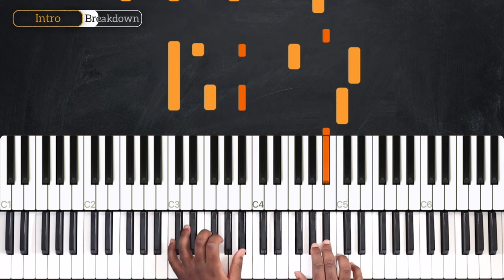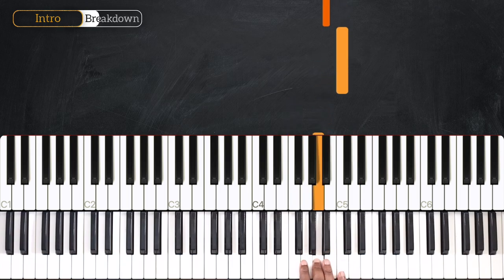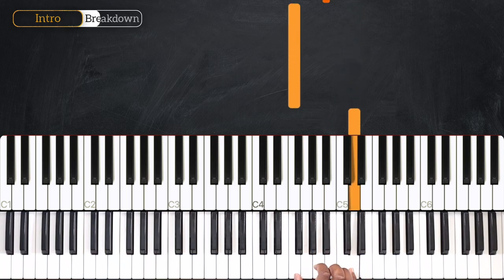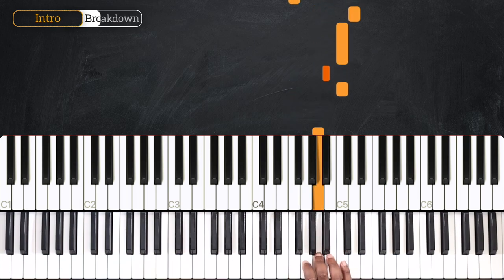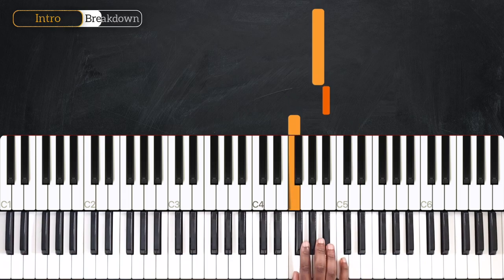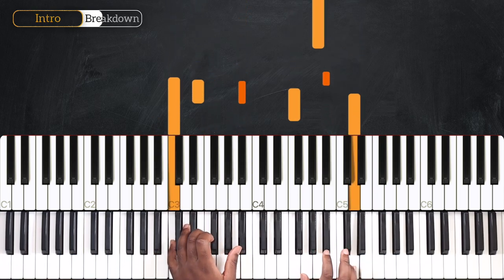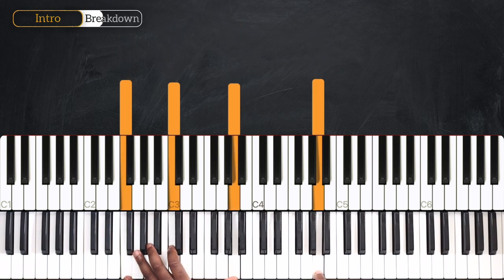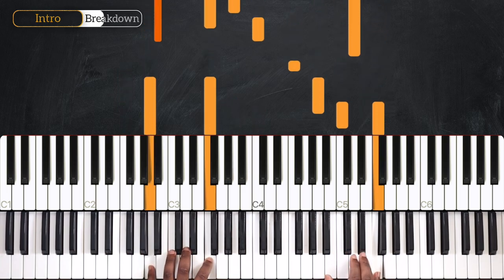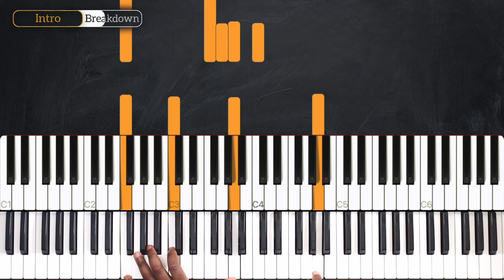And then to finish, I'm playing this. So that's C, B flat, C, D, directly down on F, then B flat, A.